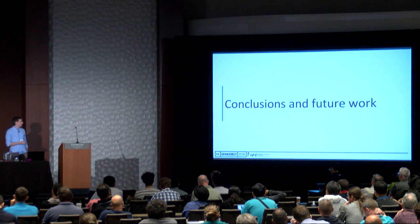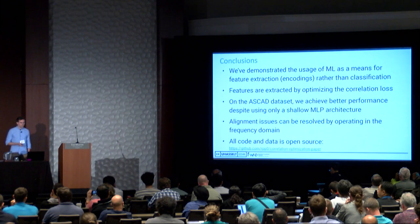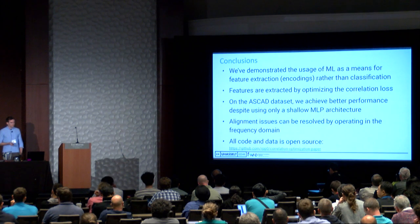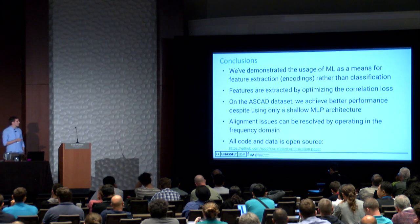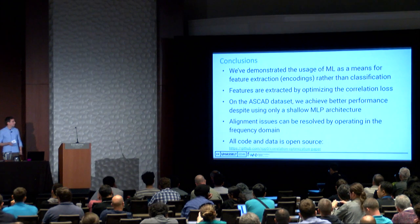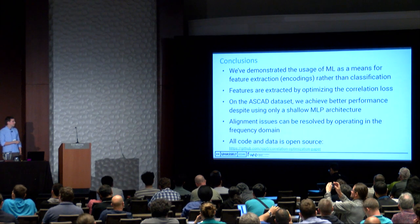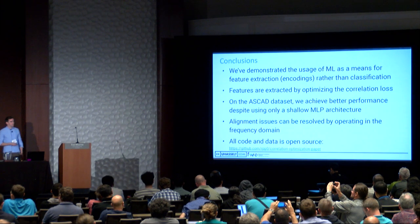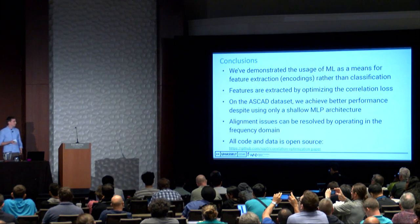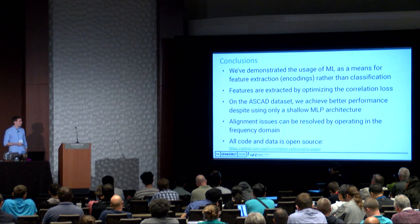In conclusions: we demonstrated the usage of machine learning as a means for feature extraction rather than classification, with features extracted by optimizing the correlation loss as opposed to the cross-entropy loss from previous works. On the ASCAD dataset, we achieve better performance despite using only a very shallow MLP architecture, which allows much faster training. Alignment issues can be resolved by operating in the frequency domain. The code and data are all open source and on GitHub, including a framework for easily processing batches of traces or working with the ASCAD dataset.